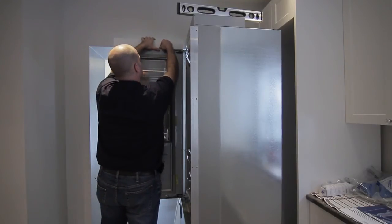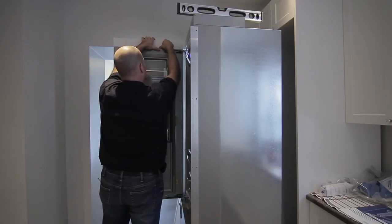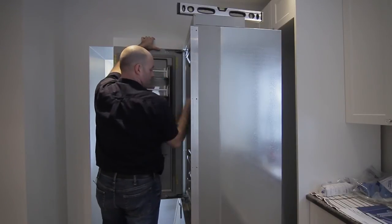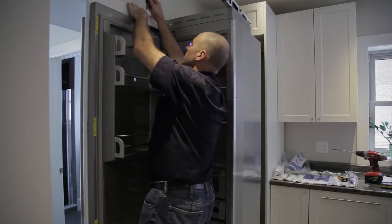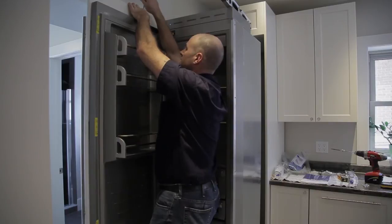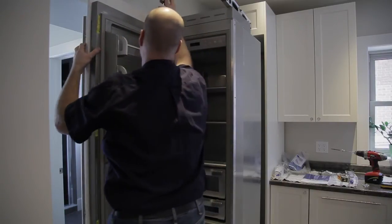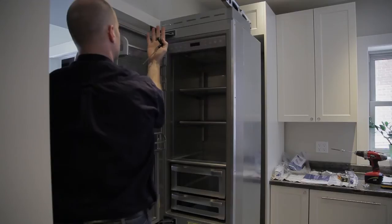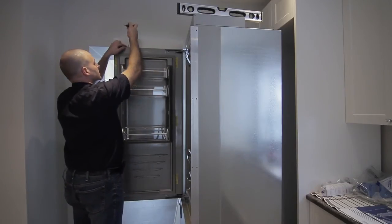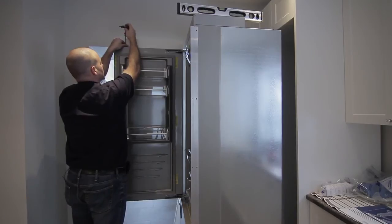We'll do the same thing, squeeze it a little bit close so I can catch the threads, which I have. Now you can use your 4mm Allen key to tighten it down. If we thread this down, it's actually going to pull the panel up, which is what we want to do. We want to pull it up so that it's in contact with that level.